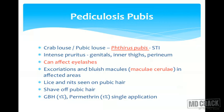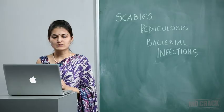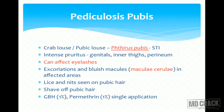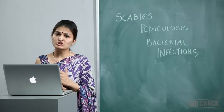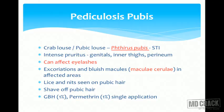Pediculosis pubis is caused by the crab louse or pubic louse, Phthirus pubis. It is a sexually transmitted infection. Patients present with intense pruritus over the genitals and surrounding areas like the inner thighs and perineum. Phthirus pubis can also affect the eyebrows and eyelashes. On examination, we see excoriations and bluish macules called maculae ceruleae — the word ceruleae indicating the blue color. Lice and nits are attached to the pubic hair. Treatment involves shaving off the pubic hair and giving antihistamines, or applying gamma benzene hexachloride 1% or permethrin 1% single application — gamma benzene hexachloride needs repeating after 10 days.